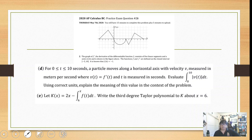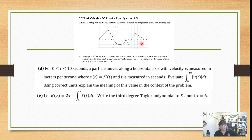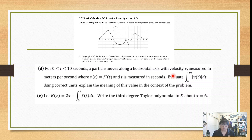Part D: for t between 0 and 10 seconds, a particle moves along a horizontal axis with velocity v, measured in meters per second, where v = f prime of t. So this is a graph of f prime, and t is measured in seconds. Evaluate the integral from 0 to 10 of the absolute value of v(t) dt. Use correct units and explain the meaning of this value in context. This is a pretty well-used formula — I've seen it in pretty much every AP test in the free response section, if not definitely the multiple choice.